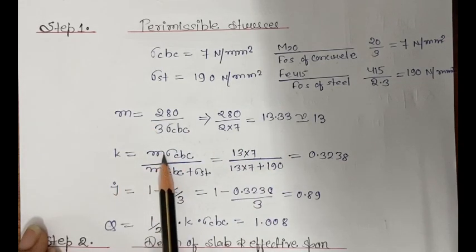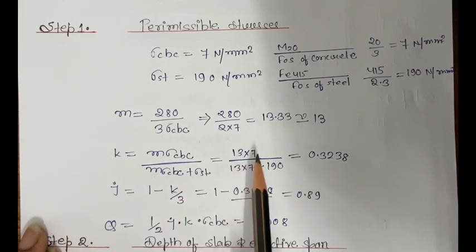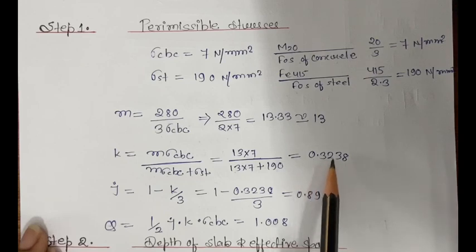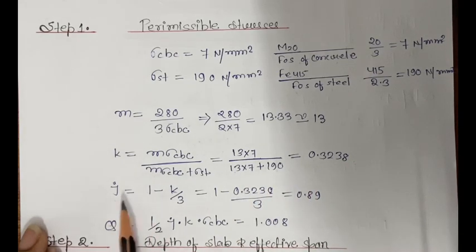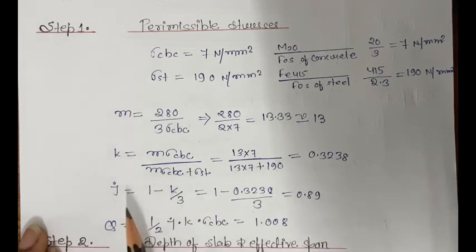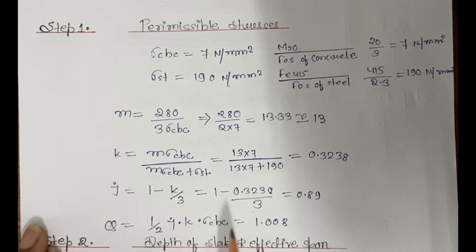Sigma ST equal to 190 Newton per mm square, coming from 415 divided by 2.3. K equal to modular ratio into sigma CBC divided by (modular ratio into sigma CBC plus sigma ST), that is 13 into 7 divided by (13 into 7 plus 190), giving K equal to 0.3238. J equal to 1 minus K by 3, giving J equal to 0.89. Value of Q equal to half into J into K into sigma CBC, giving Q equal to 1.008.